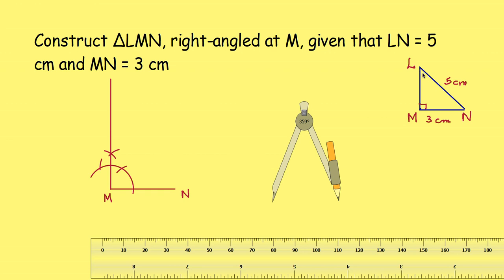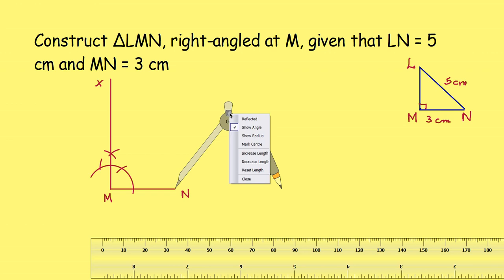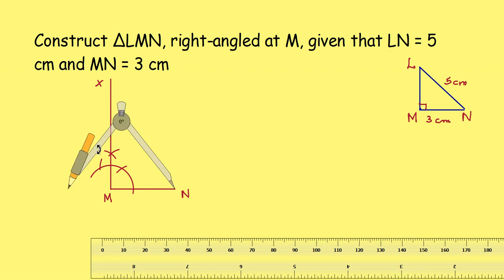Now to get L from N, you have to take 5 centimeters. From N, 5 centimeters away is L. So with center N and radius 5 centimeters, let this perpendicular be MX. With N as center and 5 centimeter radius, draw an arc.